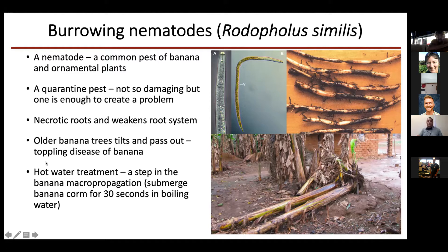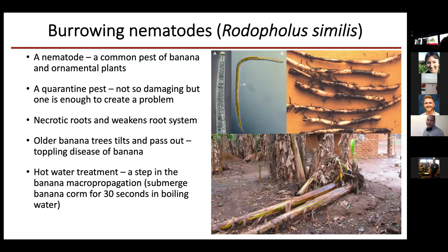For both banana weevil and burrowing nematodes, the treatment is hot water treatment. This is also a step in banana macro propagation — the way of multiplying banana plants. There is also micro propagation, which is tissue culture. This disinfection step is mainly for killing banana weevil and nematodes. We dip the banana corm in hot water for 30 seconds to kill banana weevil larvae, eggs, and nematodes.